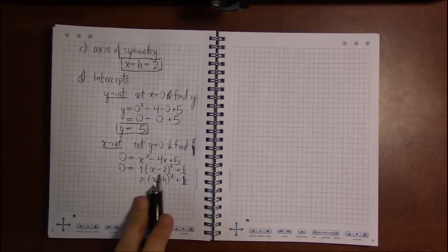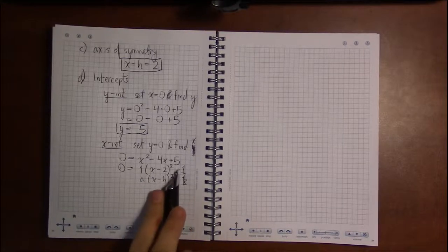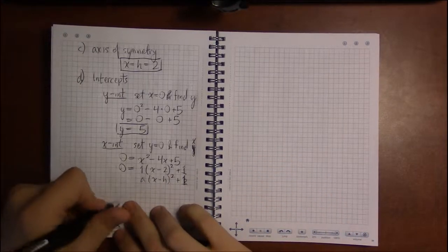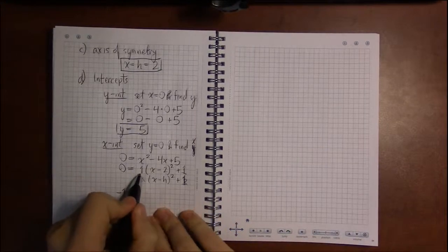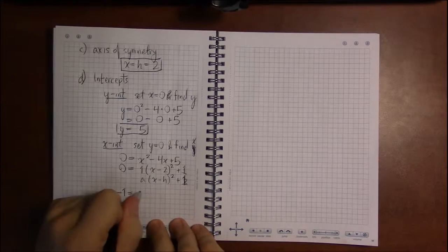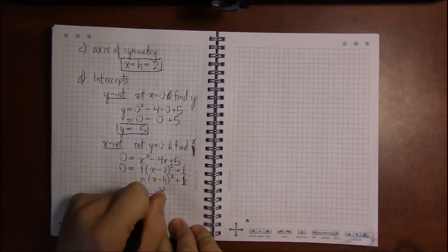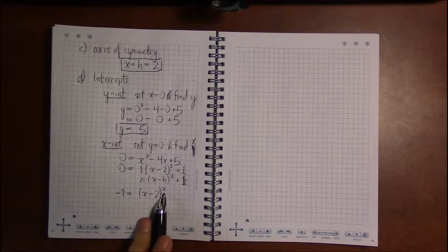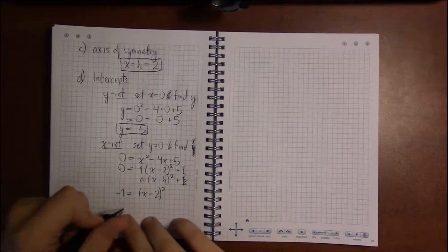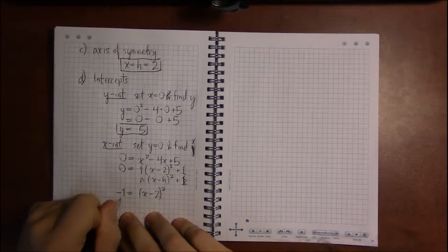Now all we do is we solve. We start by isolating the square, which means moving the plus 1 or subtracting 1 from both sides. And I can get rid of the 1 times, because 1 times anything is just itself.